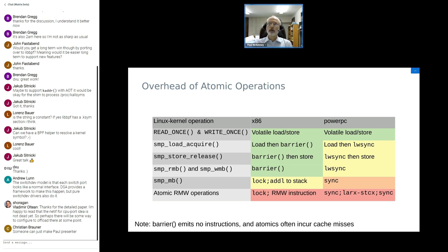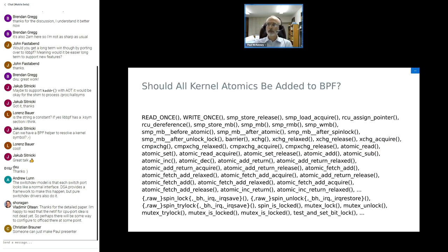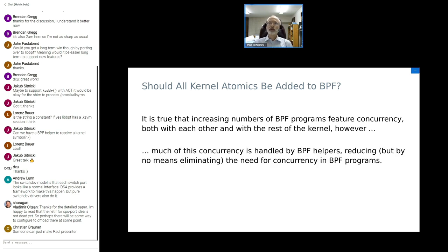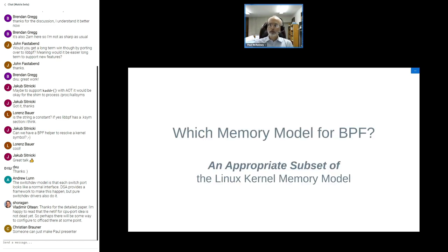There is some overhead. The added overhead at x86 is less than on the weakly ordered machines. Things like atomic operations — the shared memory atomic operations are more expensive than simple loads and stores. The atomics also incur cache misses, so it's not just the memory ordering overhead. Here is a partial list of the atomics in the kernel; we should add them as they're needed. A lot of the concurrency is handled by the helpers, which are written in Linux kernel code rather than as BPF programs.